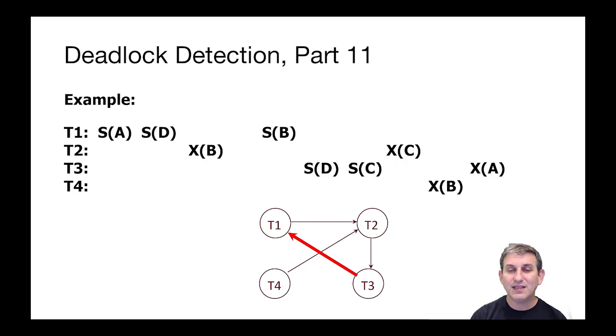The deadlock detector is literally creating a graph of who waits for whom, so we can find cycles in the graph. A cycle in the waits-for graph is a deadlock.